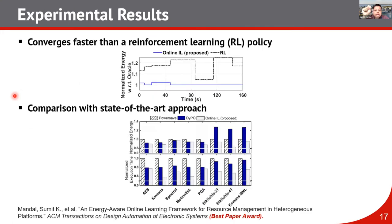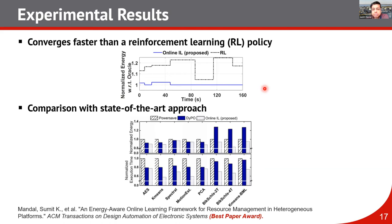We compare the convergence of our imitation learning approach with reinforcement learning, and observe that it converges far faster — reinforcement learning may take thousands of snippets to converge, while our imitation learning-based policy takes only five to six snippets. We also show that the normalized energy consumption with respect to the oracle is almost 1.0 for our IL-based policy, meaning it achieves near-optimal energy consumption.